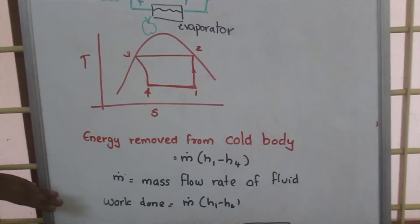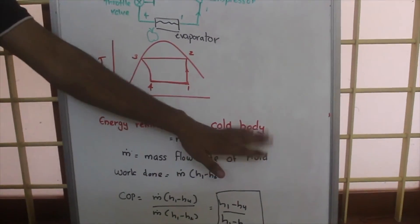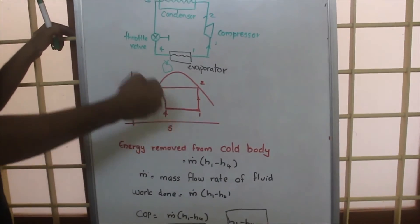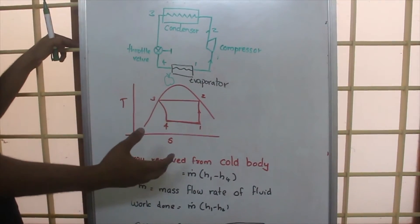Now let's look into some equations. First, energy removed from the cold body. We know that across process 4-1, the working fluid absorbs heat from the material that is to be cooled.